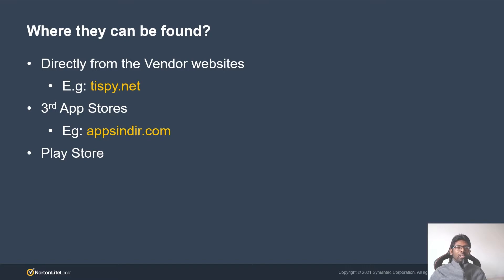Where can they be found? Stalkerware applications are widespread and made available to the public via the Play Store, third-party app stores, and directly sold from vendor websites. Play Store removed most stalkerware applications, but third-party app stores did not. They are still out there for anyone to download for free and use for stalking victims.